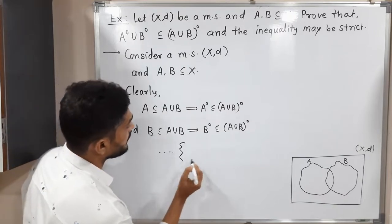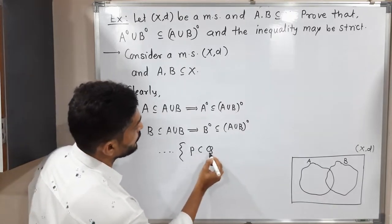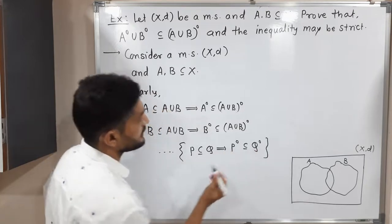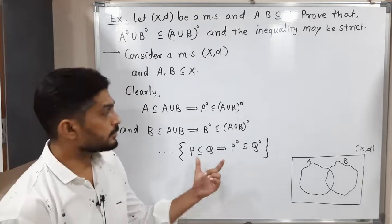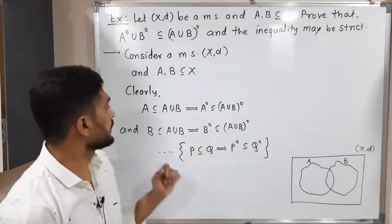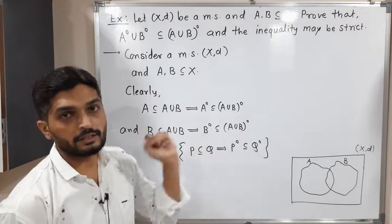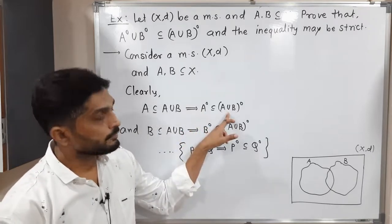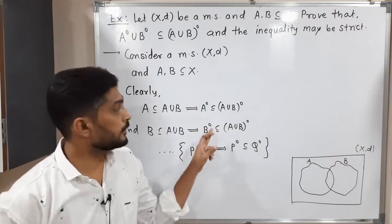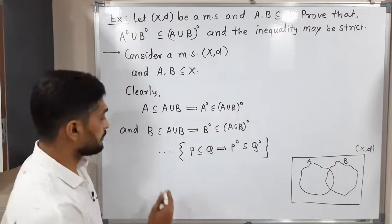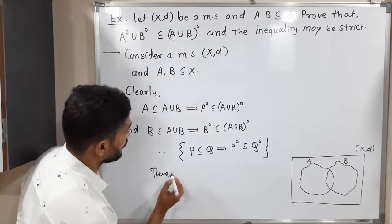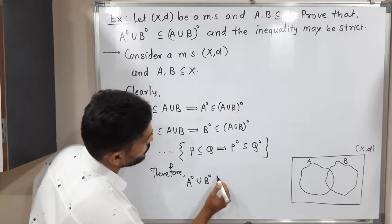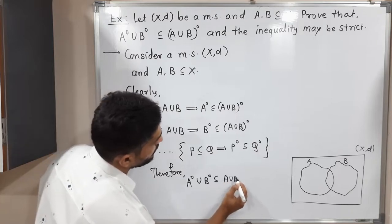This uses the result we have already discussed in previous videos: if P is a subset of Q, then the interior of P is a subset of the interior of Q. Applying that here: interior of A is a subset of interior of A union B, and interior of B is also a subset of the same set. Therefore, their union — interior of A union interior of B — is also a subset of interior of A union B.